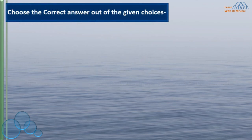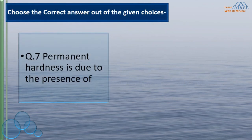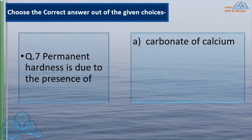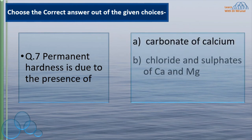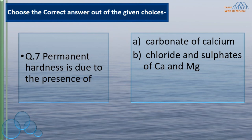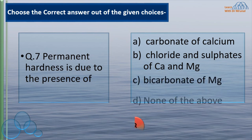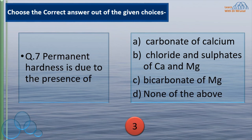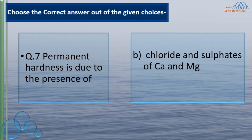Which is the correct answer? Permanent hardness is due to the presence of: carbonate of calcium; chloride and sulfate of calcium and magnesium; bicarbonate of magnesium; none of the above. We have learned that permanent hardness is due to the presence of chlorides and sulfates of calcium and magnesium. So the correct answer is B.